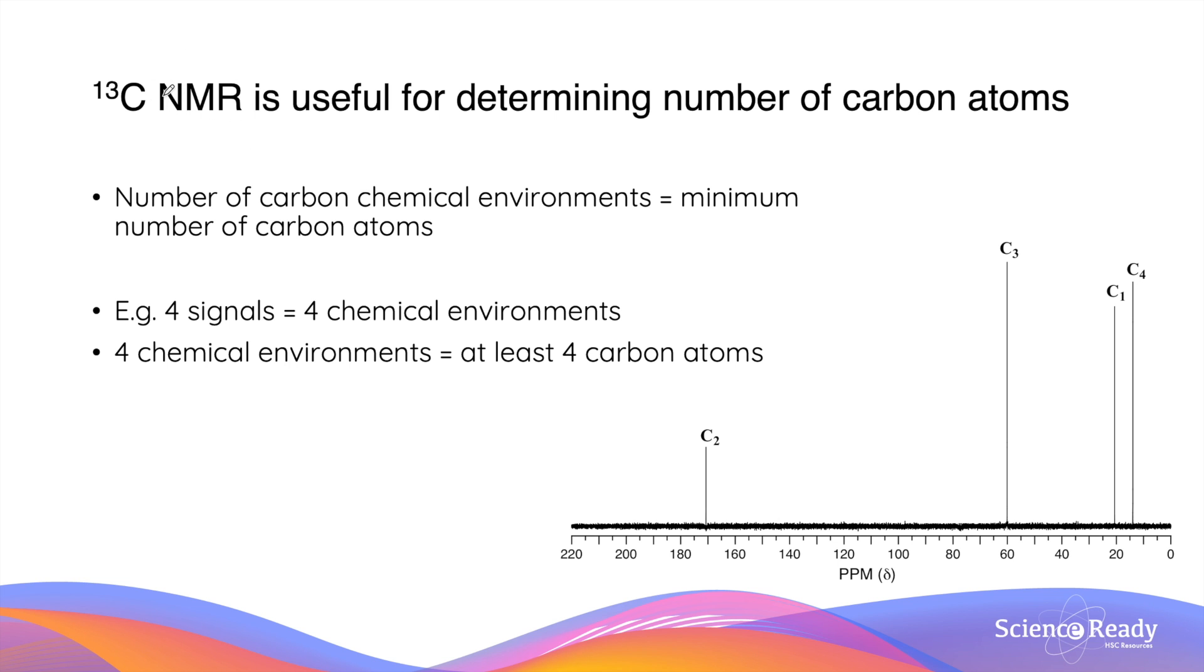Carbon-13 NMR spectroscopy is useful for determining the number of carbon atoms. In the spectrum, the number of carbon chemical environments equals the minimum number of carbon atoms.